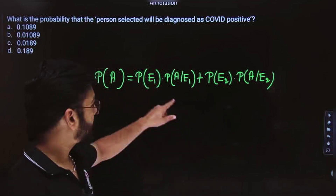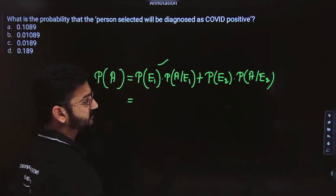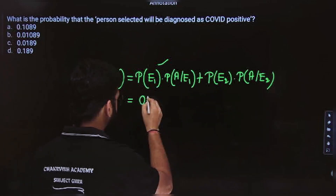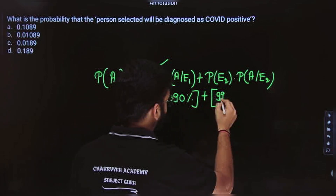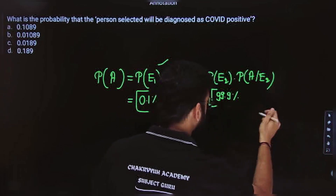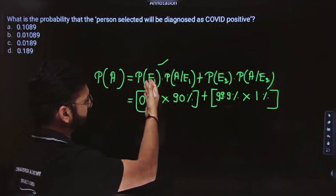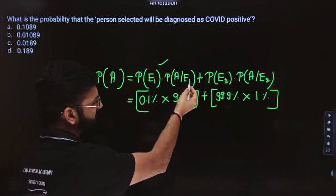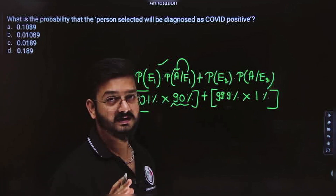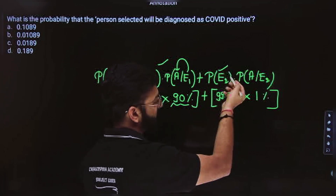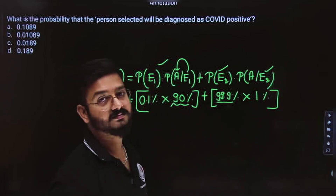Probability of A equals probability of E1 into P(A|E1) plus probability of E2 into probability of A|E2. This is also called total probability. In the Bayes theorem expression, this was the denominator — the total. The numerator was the favorable. We substitute the values: 0.1% into 90%, plus 99.9% into 1%. E1 is 0.1% of people having COVID, test coming positive for 90% of them. E2 means no COVID, 99.9%, but test coming positive for 1%.